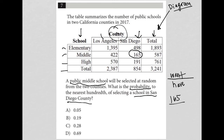Now, what am I choosing from? A public middle school will be selected at random from the two counties. So I'm choosing out of all the middle schools between Los Angeles County and San Diego County, which is a total of 587 middle schools. So my denominator — what I'm choosing from — is 587. Because this is the calculator section, I can type in 165 divided by 587, which equals 0.2810.